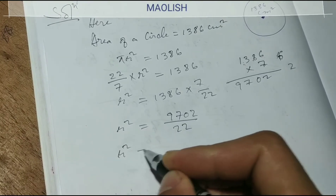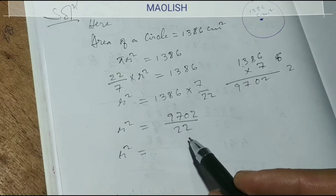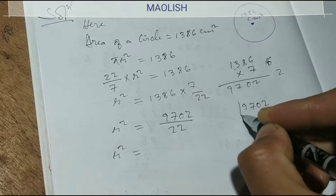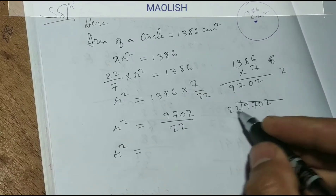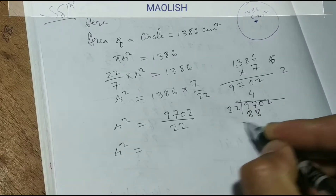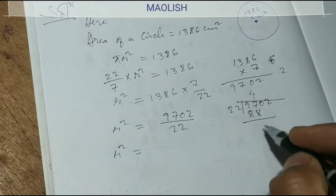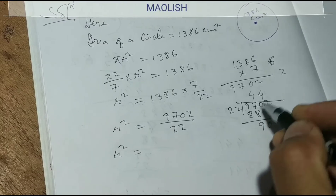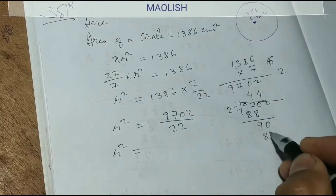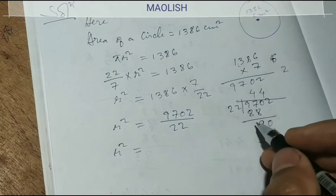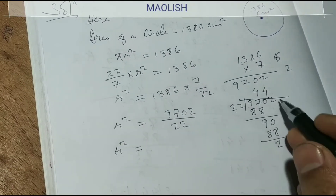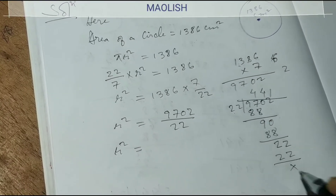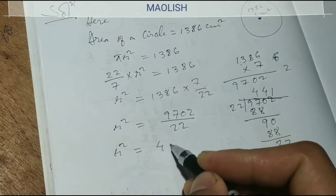R squared equals 9702 divided by 22. Dividing: 22 goes into 97 four times — 4 into 22 is 88. 97 minus 88 is 9. Zero comes down, giving 90. 4 into 22 is 88. 90 minus 88 is 2. 2 comes down, giving 22. 1 into 22 is 22. The answer is 441.